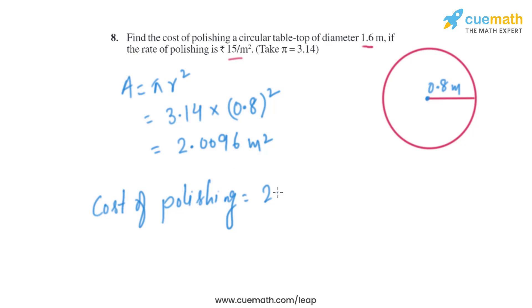The area is 2.0096 square meters and the rate is ₹15, so we just need to multiply them. When we multiply, we get the cost as ₹30.144. That will be the cost of polishing a circular table of diameter 1.6 meters.